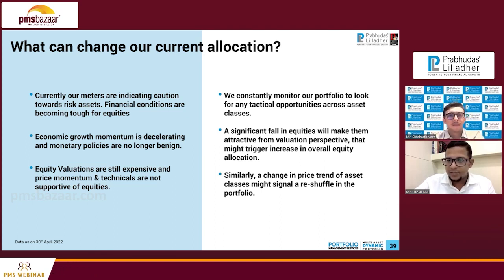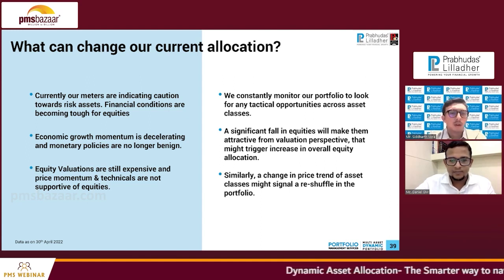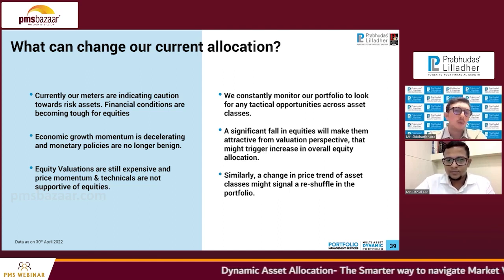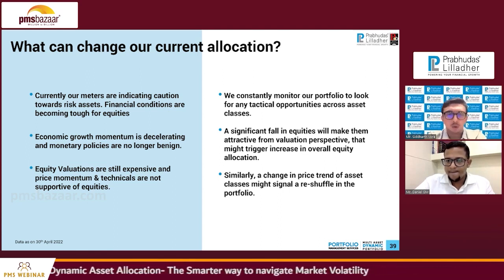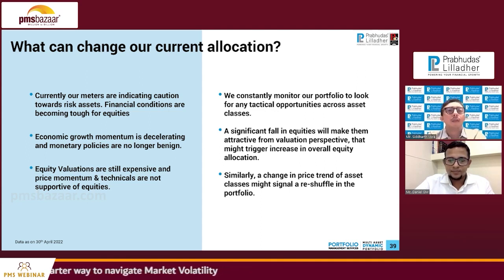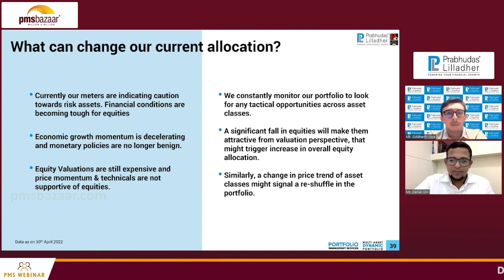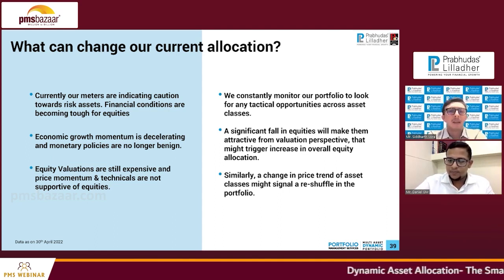Most participants are keen to know about the fee structure and exit clause. There are two fee structures. The one we recommend to all clients is a hybrid model: a fixed fee of 1.25%, zero entry load, zero exit load, no lock-in periods, plus a 15% profit share above a 10% hurdle rate. A few investors over a long cycle have also preferred the fixed fee-only model at 2% with no profit share component. The high-watermark principle is applicable when calculating the hurdle rate.